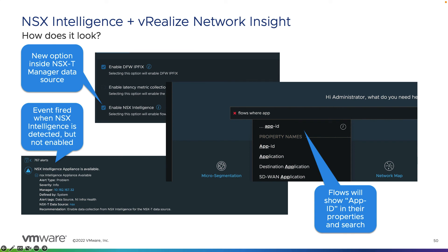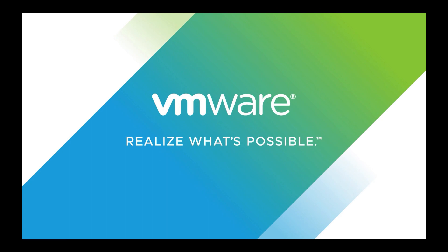Inside the Elastic Search Engine within vRealize Network Insight, you can utilize queries such as 'flow where app ID equals' and specify a specific Layer 7 app ID to see those flows. You will also see those flows in regards to the Layer 7 info under the VM and the NSX-T Manager dashboard. This helps enrich the flows for deeper visibility into Layer 7 app IDs when it comes to NSX Intelligence integration within vRealize Network Insight. Thank you.